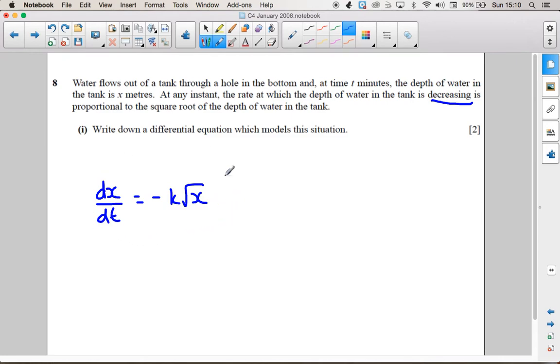So that's my answer to part 1. So the rate at which the depth is changing, that's my depth there, well it's decreasing at a rate proportional, so we need a k, to the square root of the depth.